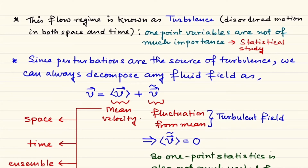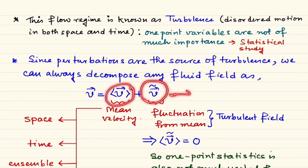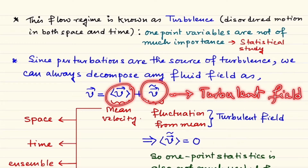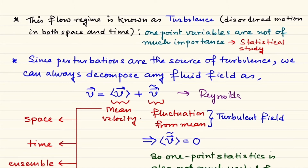Since perturbations are the source of turbulence, we can decompose every fluid field as a mean field plus a perturbation — the fluctuating part, sometimes called the turbulent field. This type of decomposition was done by Reynolds and is known as Reynolds decomposition.